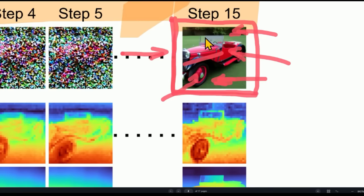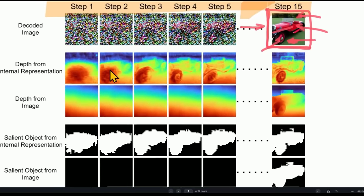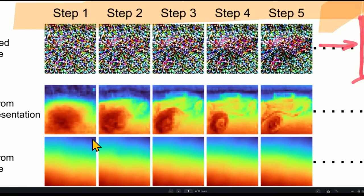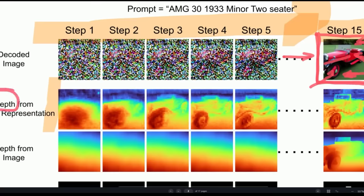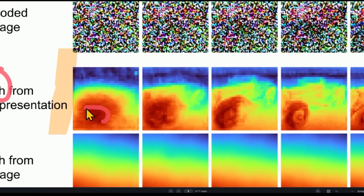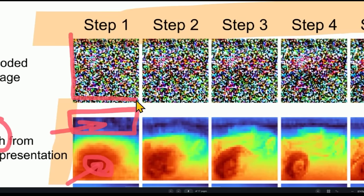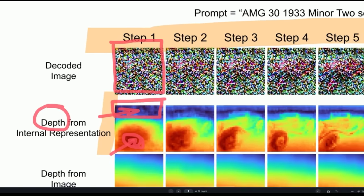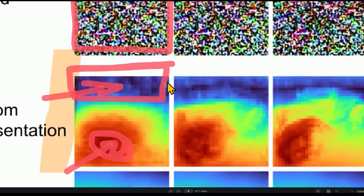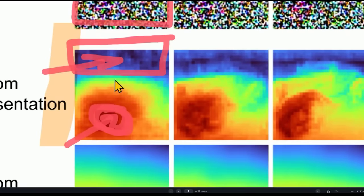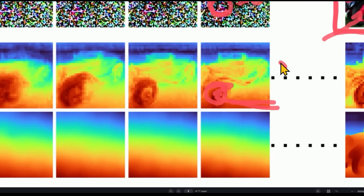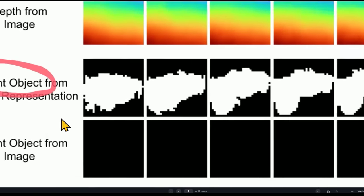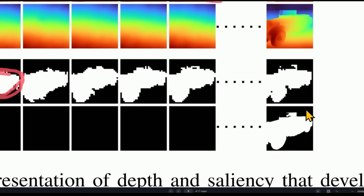And yet, when we dive in to understand how it's building these images from scratch, we start to notice something. Very early on, when it's building the image, it knows that something is in the foreground — it's closer to us — and the blue region is the background, far from us. You can't tell what this image will be until much later. But the model knows something is in the foreground and something's in the background. It also knows the salient object — what the focus of the image is. It doesn't know what a car is; it just knows this is the focus of the image. Only towards the end do we realize: yes, this is the car.